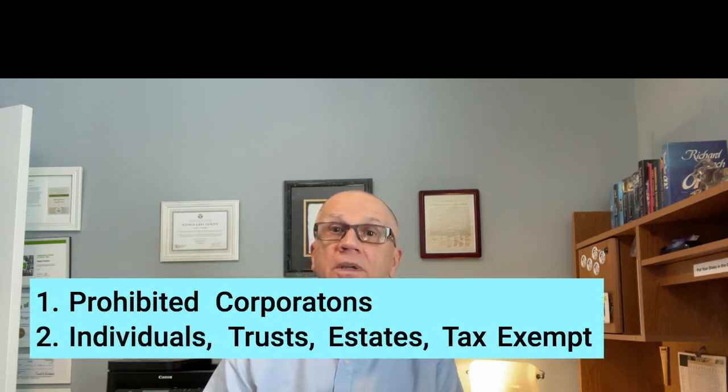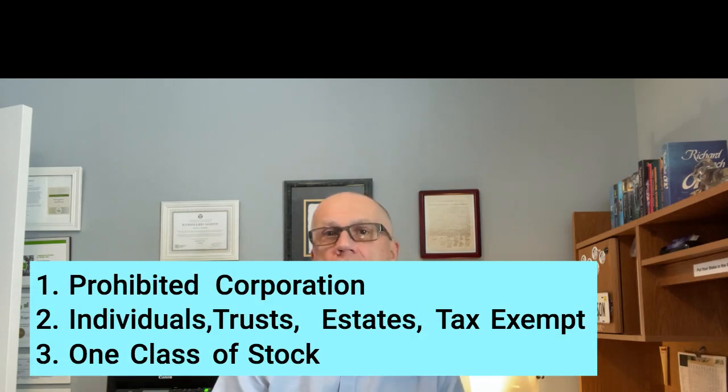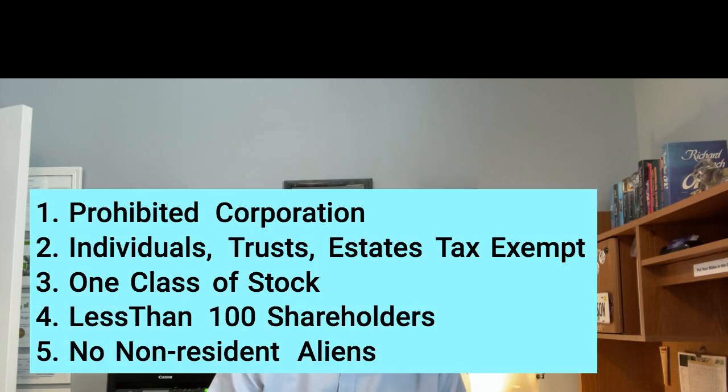Large and public corporations usually can't choose the S corporation election because of the small business requirements. These requirements include: it can't be a prohibited corporation such as an insurance company, possessions corporation, or taxable mortgage pool; shareholders must be individuals, certain types of trusts or estates, or qualifying tax-exempt entities; it can't have more than one class of stock; there can be no more than 100 shareholders; and no shareholder can be a non-resident alien. A corporation is eligible to be taxed as an S corporation only if it qualifies as a small business corporation each fiscal year, so if you have a rapidly growing business, you must make sure you continue to qualify or it will fall back into regular C corporation status with unexpected tax consequences.